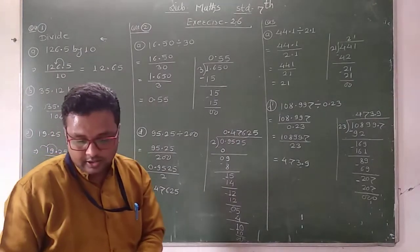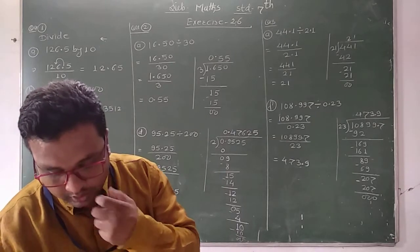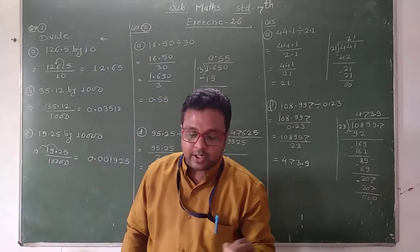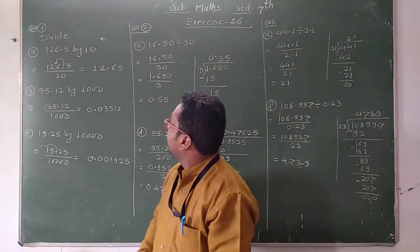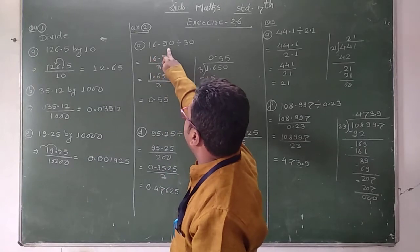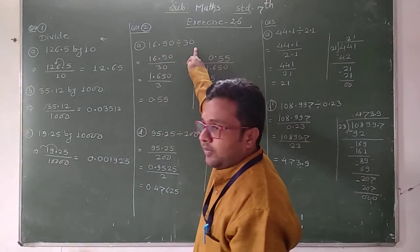Now there is the second type of division. Question number 2 is given: divide the following. It is given 16.50 is divided by 30.